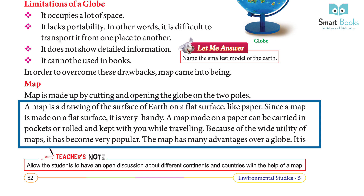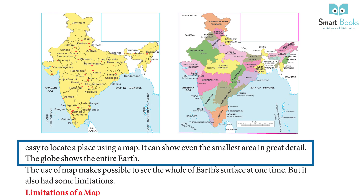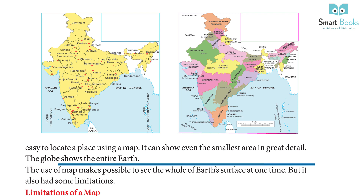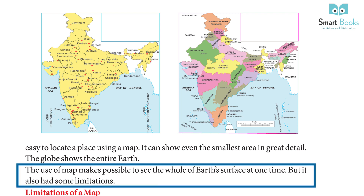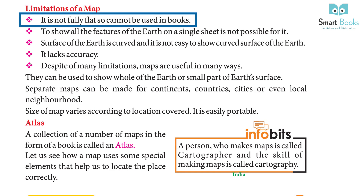Because of the wide utility of maps, they have become very popular. A map has many advantages over a globe: it is easy to locate a place using a map, it can show even the smallest area in great detail, and the use of a map makes it possible to see the whole of the earth's surface at one time.